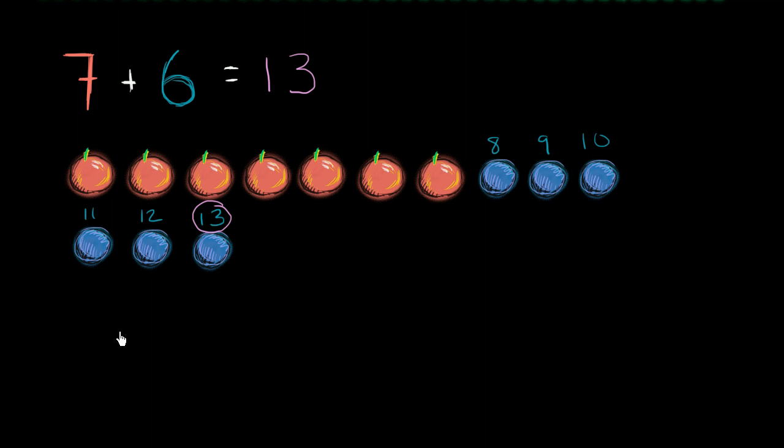Now, what are other ways that we could have thought about this? Well, we could have also done it on a number line. So let's draw ourselves a number line. So let's say I have a number line. And I could start the number line at seven. I could start at seven, and I'm going to add six more. I'm going to move six more up the number line.